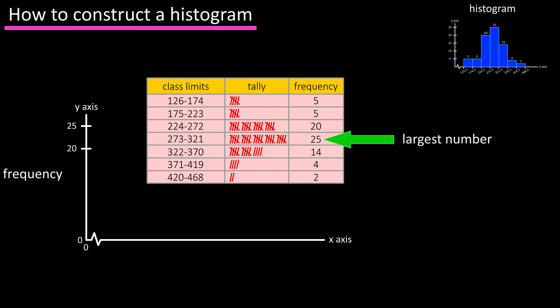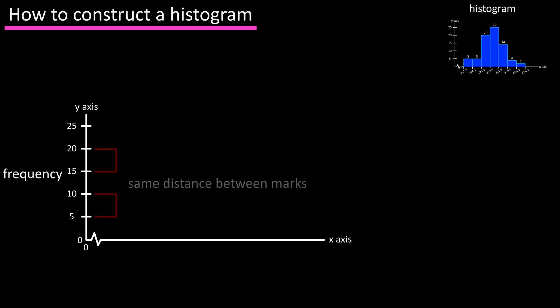Then we're going to mark 20, 15, 10, and 5 on the y-axis. Make these so that they are the same distance from one another, or at least within reason if you're drawing this by hand.